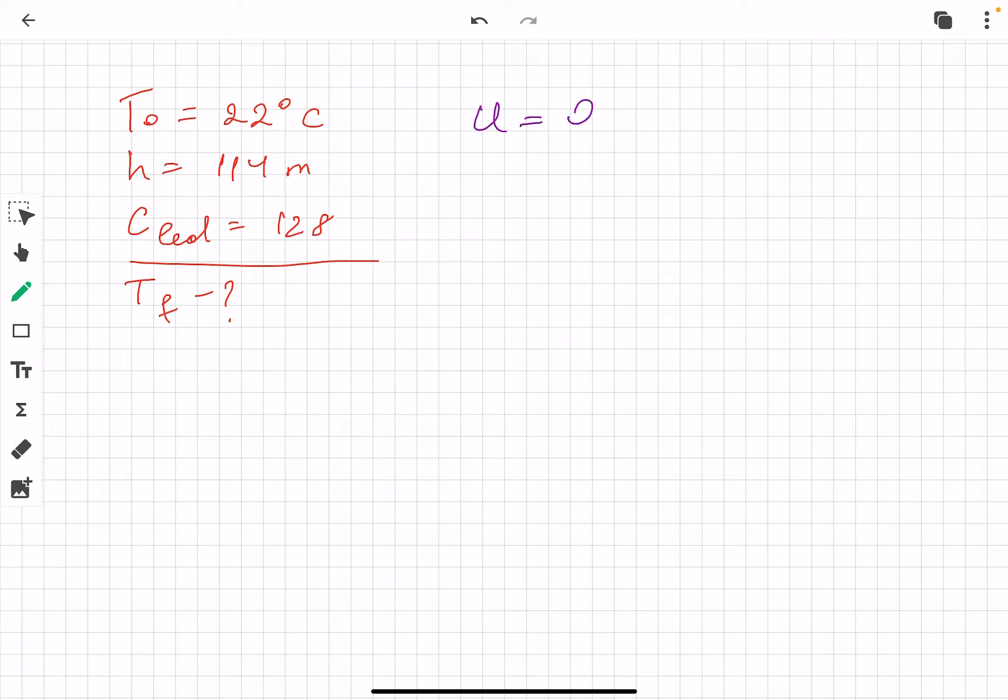Potential energy will be equal to the heat Q. That means mgh equals mc∆T.